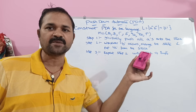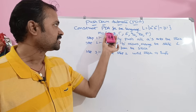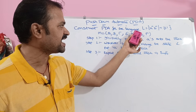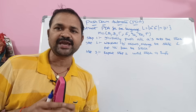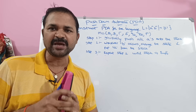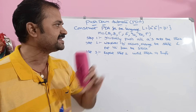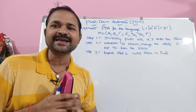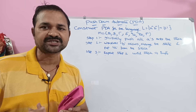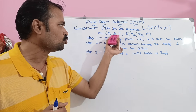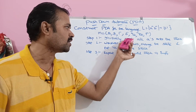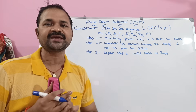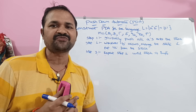Now let us see this example. Construct a pushdown automata, PDA, for the language L equal to A power N B power N such that N is greater than or equal to 1. We know that PDA is represented by 7 tuples: Q comma sigma comma tau comma delta comma Q naught comma Z naught comma F.